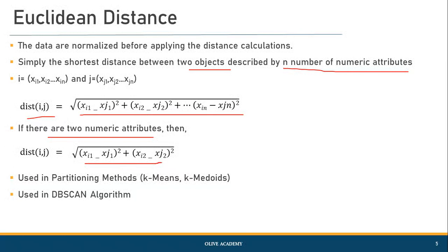Why do we talk about Euclidean distance? It is one of the important distance metrics used for k-means clustering and also in the DBSCAN algorithm. In this video, the focus is on how to find Euclidean distance efficiently when given n number of data points.